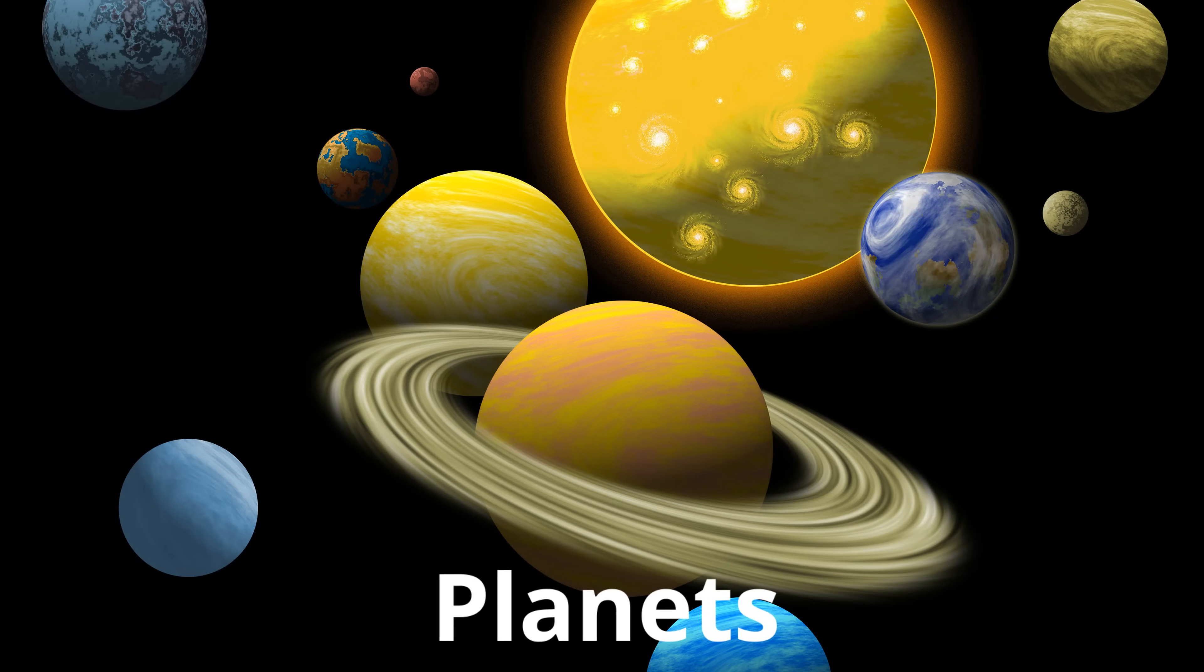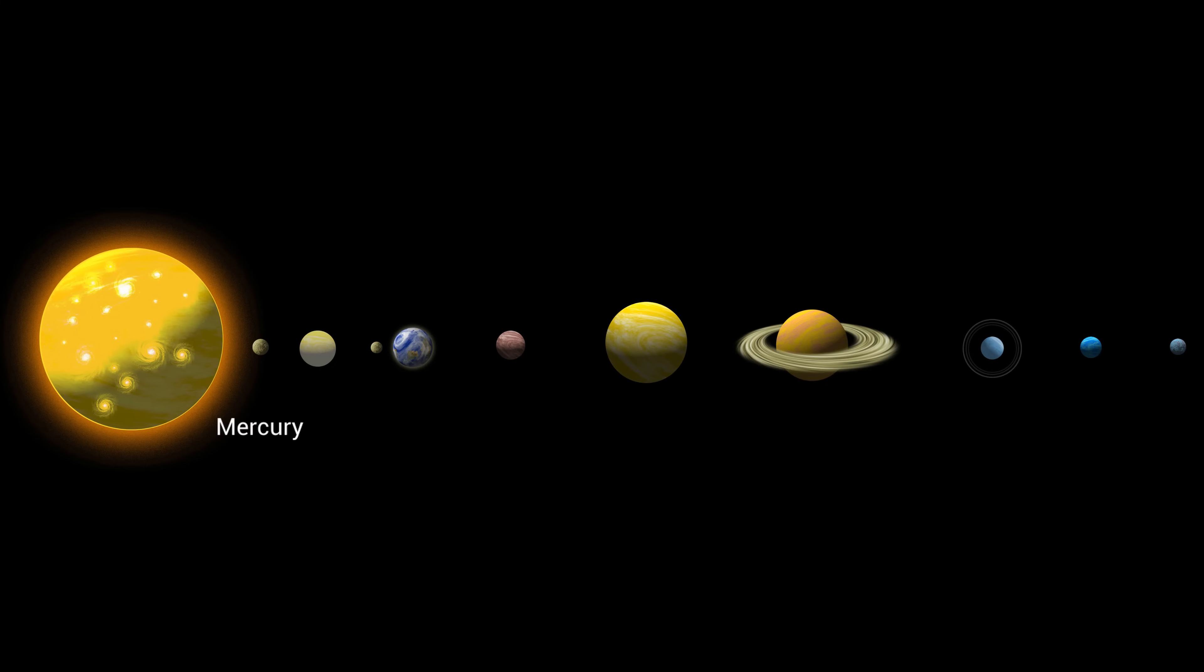There are eight planets in our solar system. The planet Mercury is the closest to the sun, followed by Venus, Earth, Mars, Jupiter, Saturn, Uranus, and Neptune.